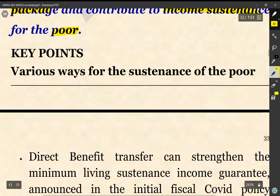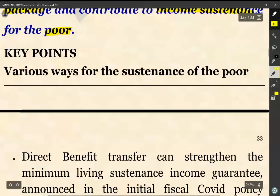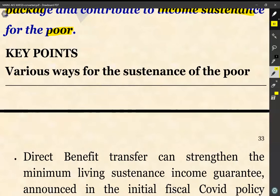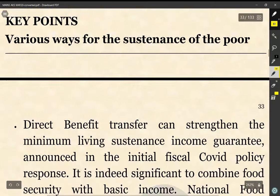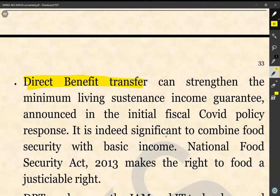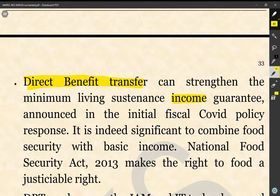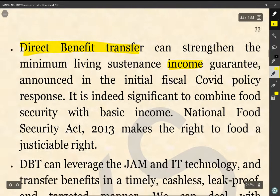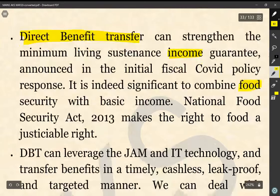The key points or the indicative answer which we are to discuss: what are the various ways for the sustenance of the poor? Direct benefit transfer can strengthen the minimum living sustenance income guarantee announced in the initial fiscal COVID policy response. It is indeed significant to combine food security with basic income.